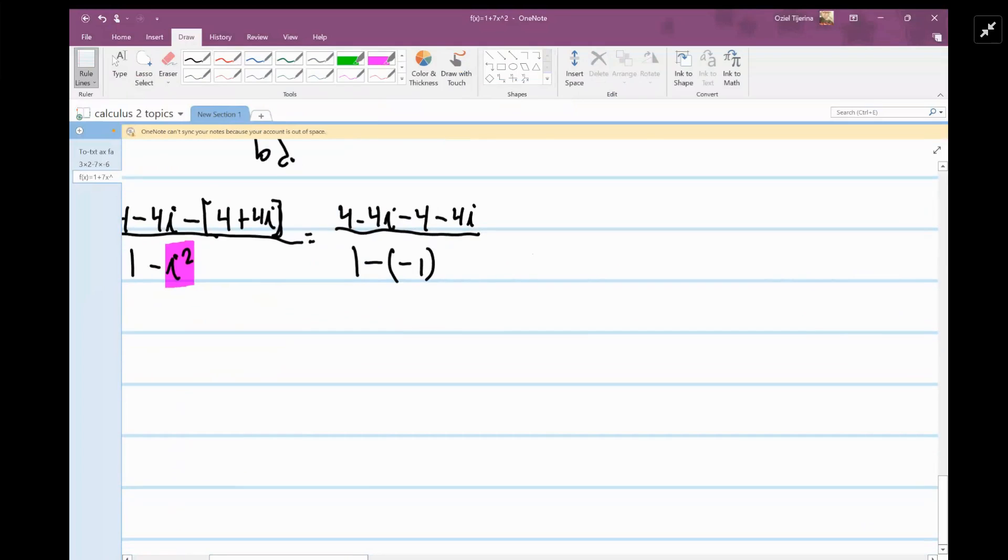Right, so then we have a 4 and a negative 4, so we cancel those out. We have a negative 4i and a negative 4i. So that gives us negative 8i.